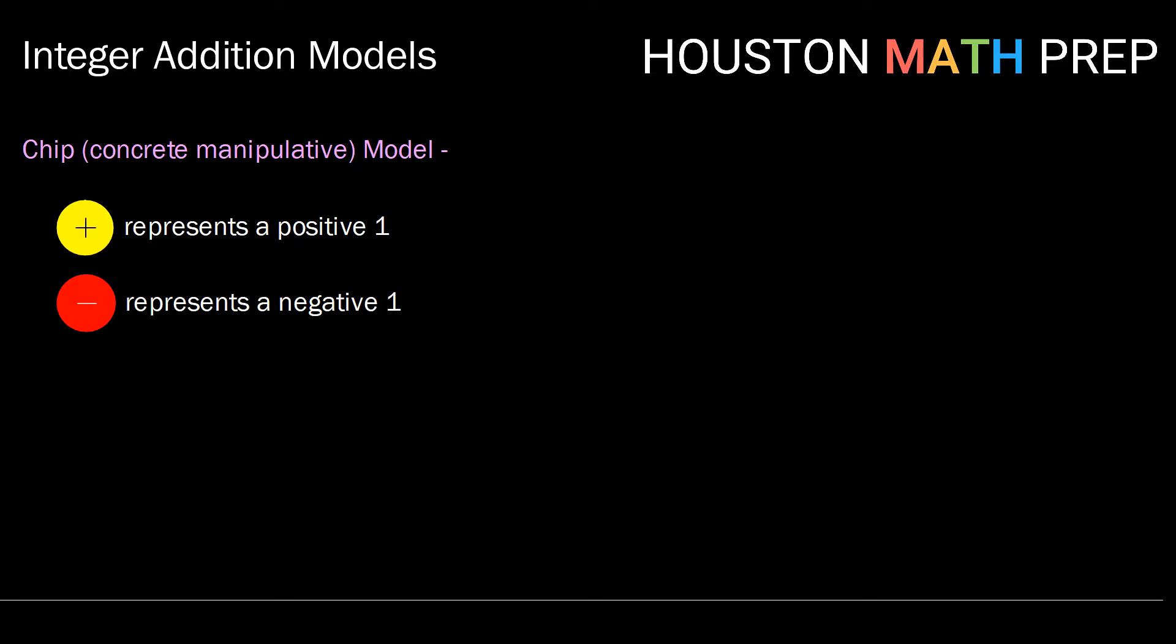So here we're just going to go ahead with the chips. Again, a positive yellow here represents a positive one, and a negative red represents a negative one.